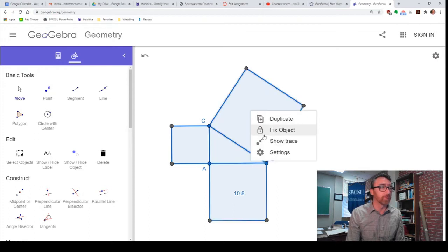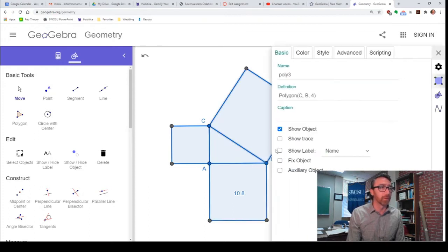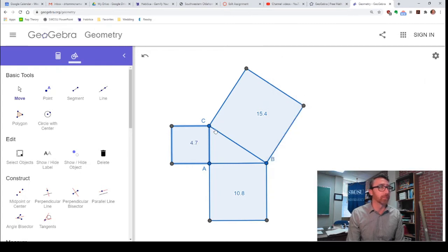Now, notice I kind of right clicked on that polygon right there. I want to show the label, but I want to show the value. So, when you have a polygon, the value component is going to be the area of the polygon.